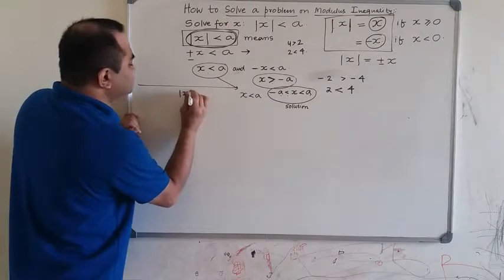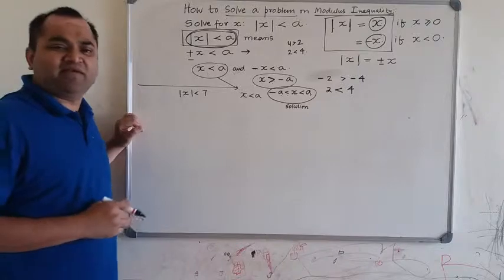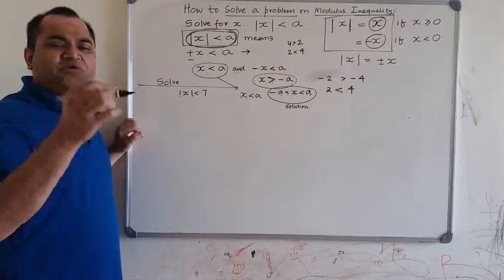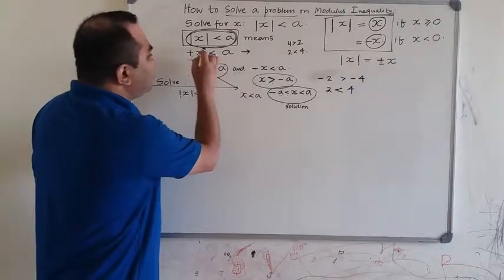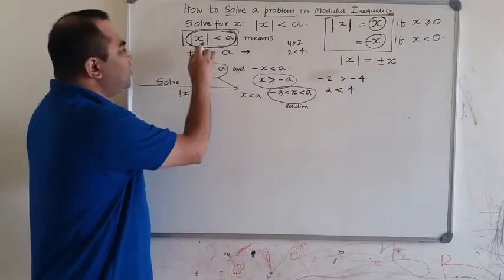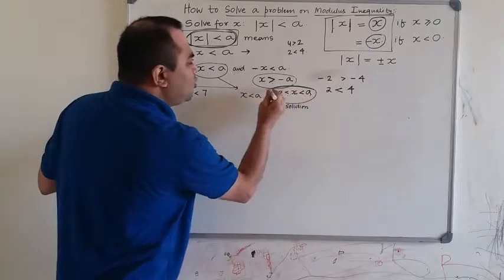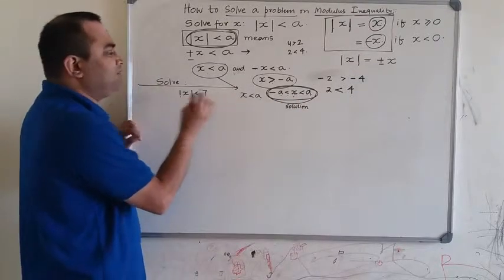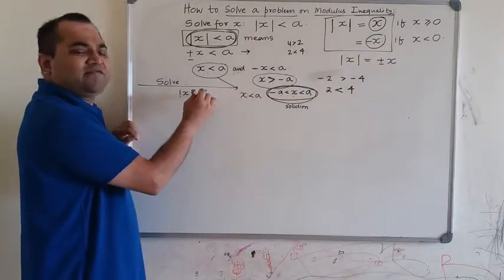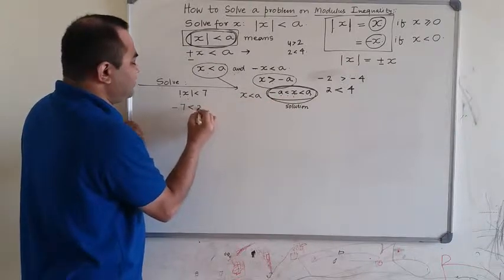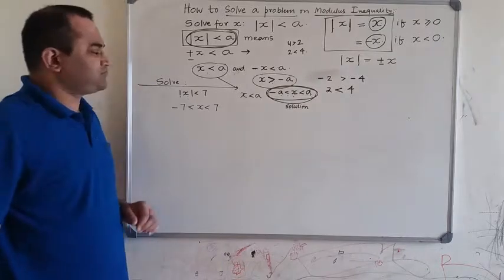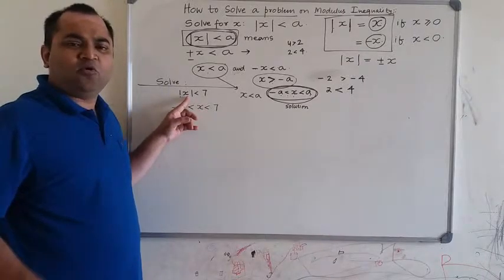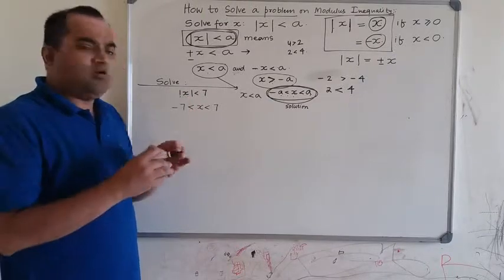For example, if absolute value of X is less than 7, you do not need to expand the full working. If you remember the general solution, just substitute: in place of a put 7, so minus 7 is less than X is less than 7. That is the solution — the values of X satisfying this absolute value inequality.